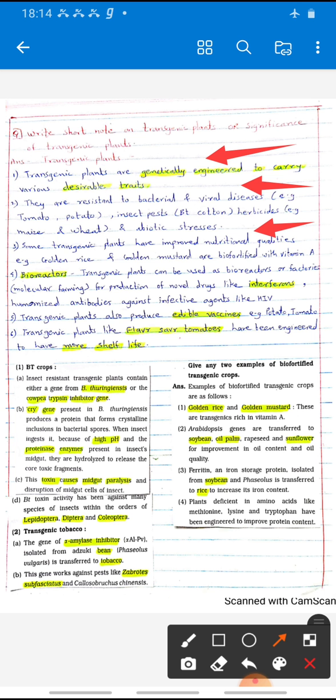Some transgenic plants are used as bioreactors or factories, means molecular farming, for production of drugs like interferon as well as humanized antibodies which are used against diseases like HIV.